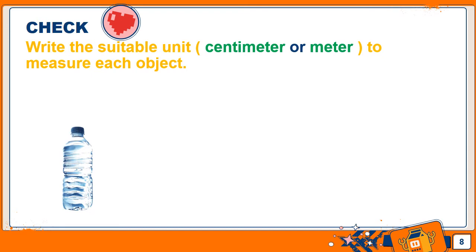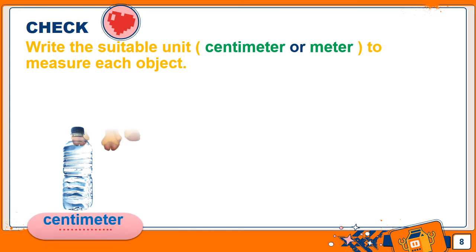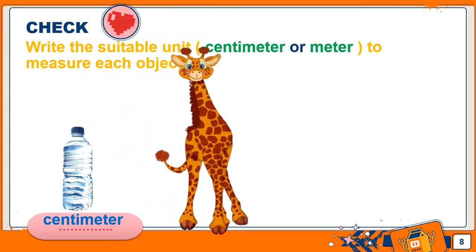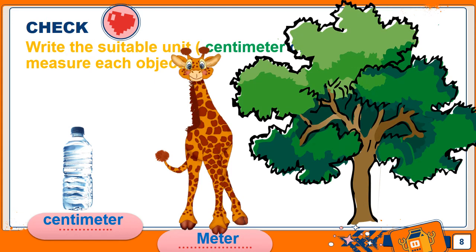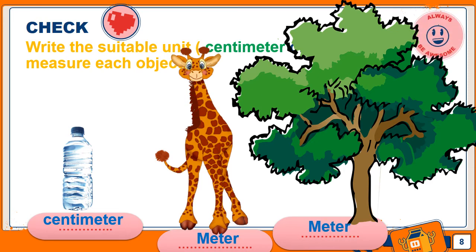Let's read the question: write the suitable unit — centimeter or meter — to measure each object. This bottle is small and short, so we measure it in centimeters. The giraffe is tall and large, so we measure it in meters. The tree is also big and tall, so we measure it in meters. Centimeter is for small things; meter is for big, long, and large things.